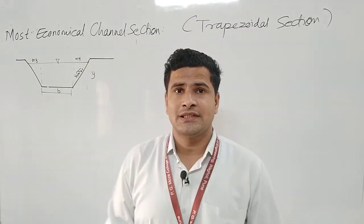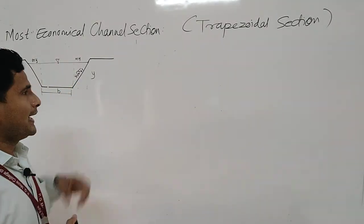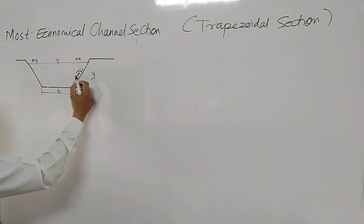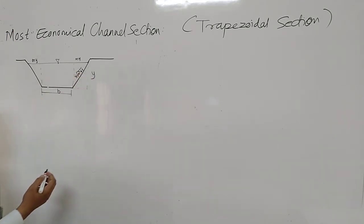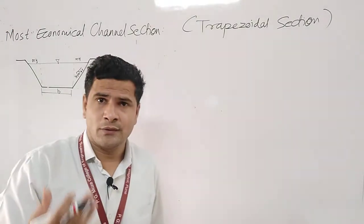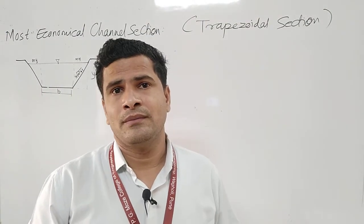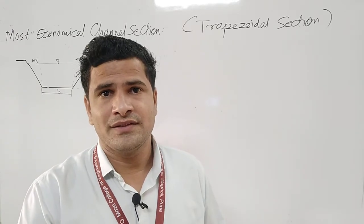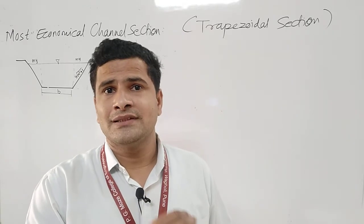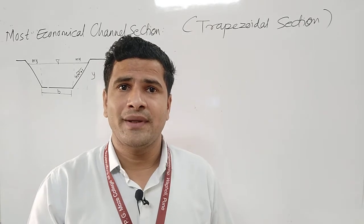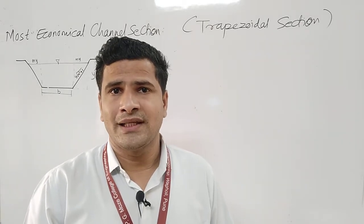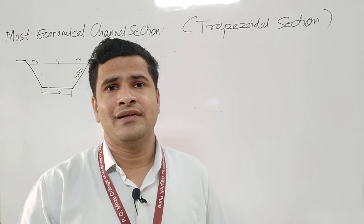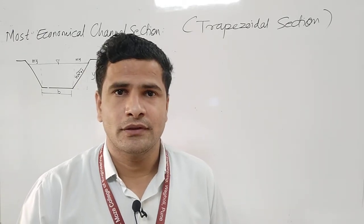Consider a trapezoidal channel section having bottom width small b. The depth is y, the horizontal side slope distance is m·y, and the sloping side will be y times the square root of (m² + 1). Many students get confused — even I was confused when I studied it the first time. But with practice, it becomes a very easy concept, and in this session you will understand this derivation very easily and will not forget it for a lifetime. The basic requirement is your standard geometry knowledge — the Pythagorean theorem.